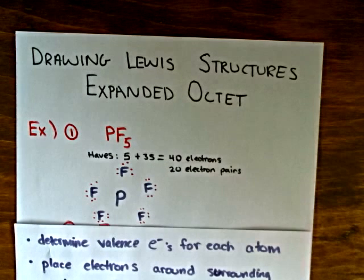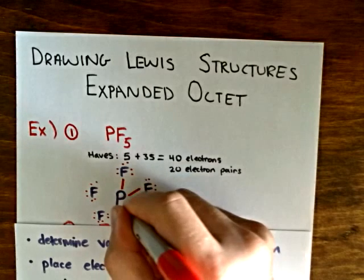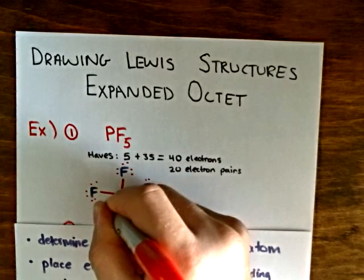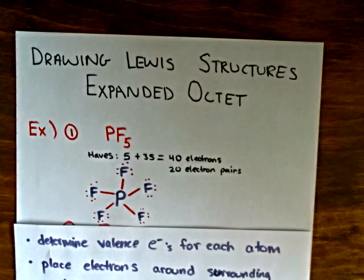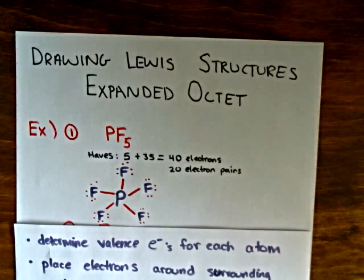I've used 15 electron pairs out of 20 for the lone pairs on the fluorines. Now we draw in the bonds — each bond has two electrons, or one electron pair. That uses the remaining five electron pairs, so we've now used all 20 electron pairs. That will be the Lewis structure for phosphorus pentafluoride.